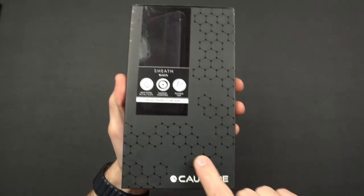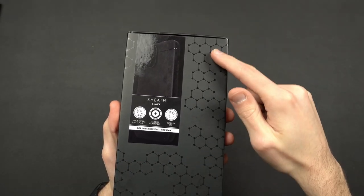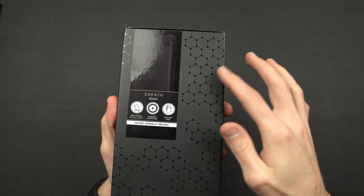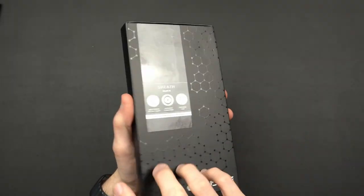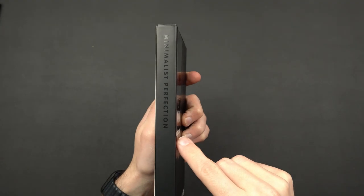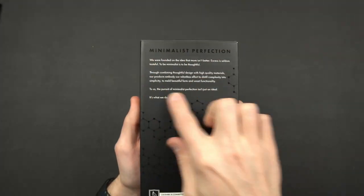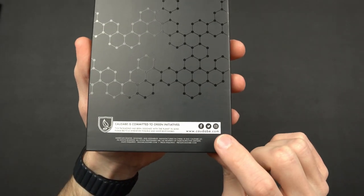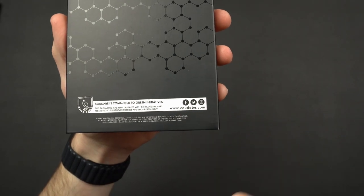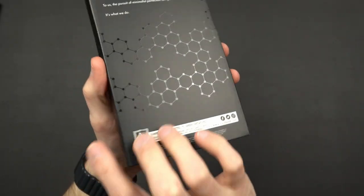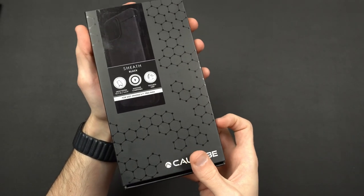On the bottom you're going to get a little bit of Kadabe branding and then a pattern on the case. It almost looks like a molecular structure type thing going on, so nice touch there. On the side, minimalist perfection. On the back, much of the same up here, and then you are going to get their website along with their social media tags down there.